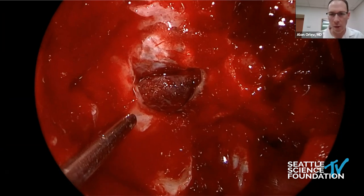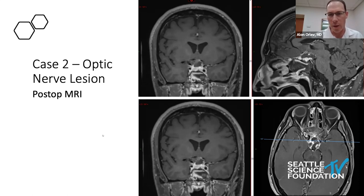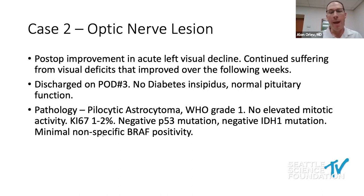The post-op MRI showed we achieved what we wanted — mostly working on the left, we managed to decompress the suprasellar region. The pituitary remained anatomically intact and also remained functional. Post-op improvement in left visual decline was immediate, as we had decompressed the blood clots. He continued to have some visual deficit that improved over the following weeks. He was discharged on POD3, no diabetes insipidus, normal pituitary function. Pathology was pilocytic astrocytoma, WHO grade 1 — no elevated mitotic activity, low Ki-67, negative P53, negative IDH1, and unfortunately minimal BRAF positivity, which we were hoping for as it would enable targeted treatment.